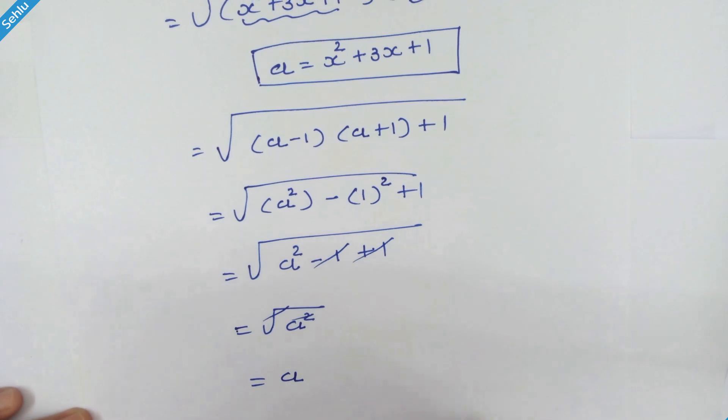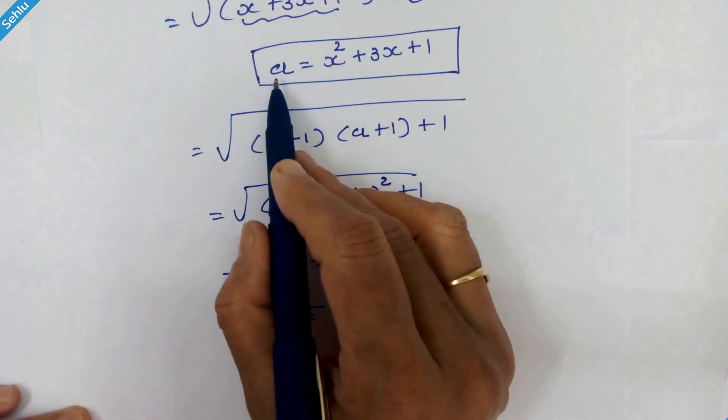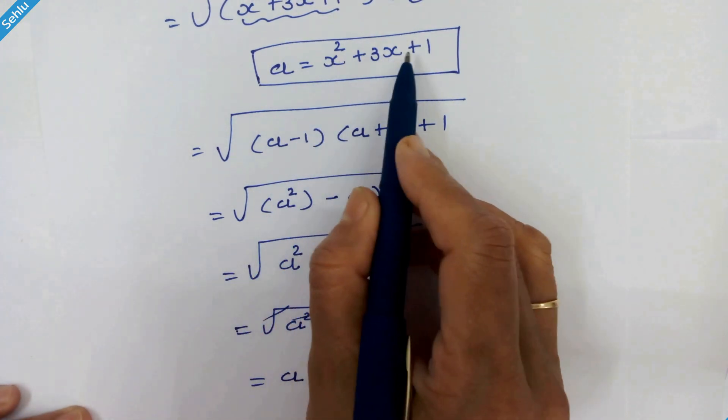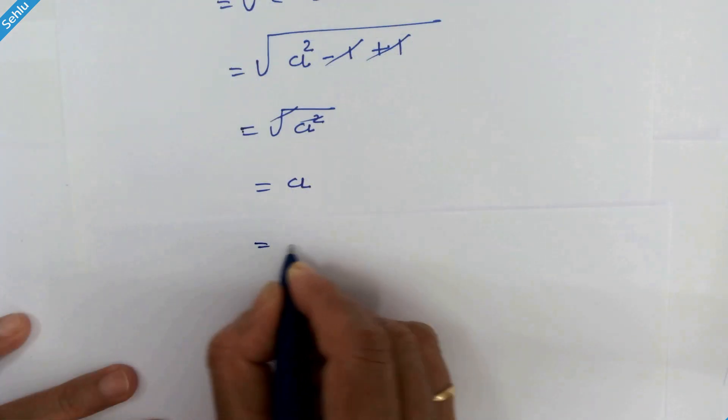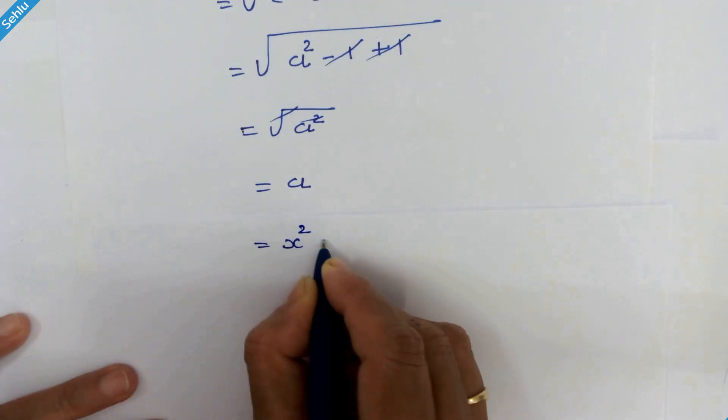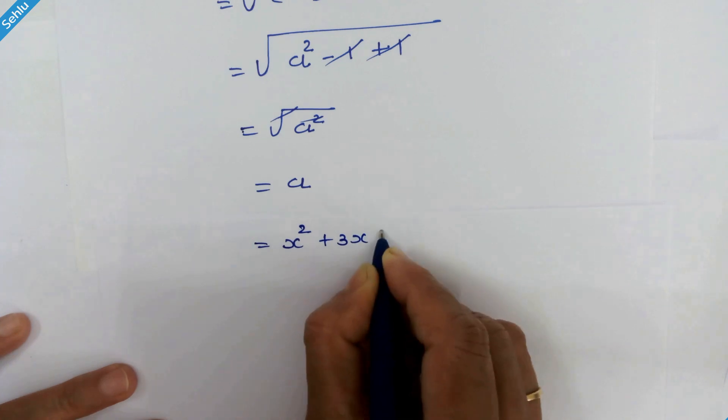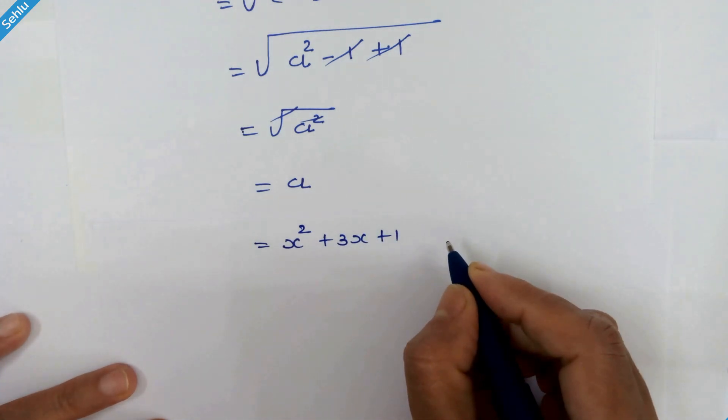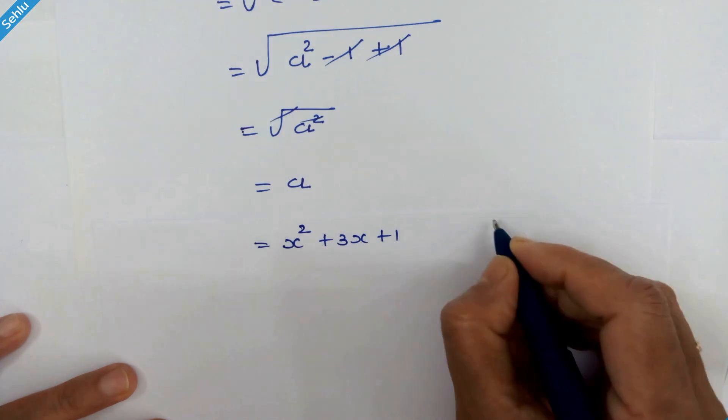Now we have taken a in place of x squared plus 3x plus 1. So it will be x squared plus 3x plus 1. Now let's put back the original value of x, which is 1000.